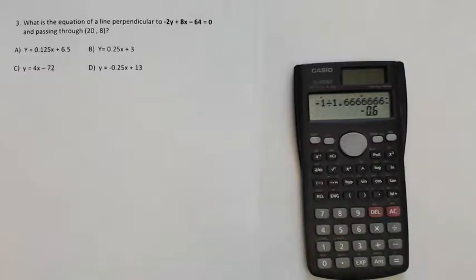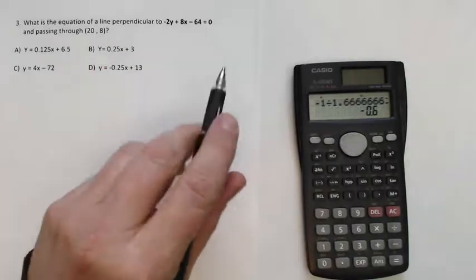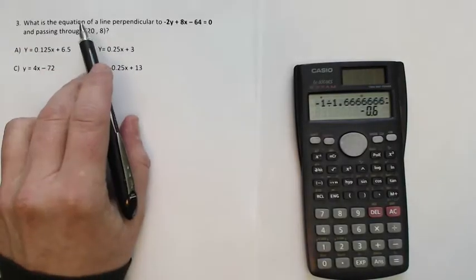This Google quiz, question number three in parallel lines. What's the equation of a line perpendicular to negative 2y plus 8x minus 64 equals 0 and passing through the point 28?